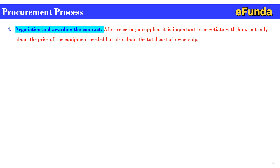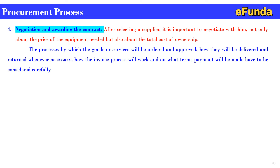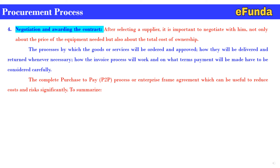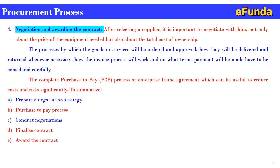Fourth: negotiation and awarding the contract. After selecting a supplier, it is important to negotiate not only about the price of the equipment needed, but also about the total cost of ownership. The process by which goods or services will be ordered and approved, how they will be delivered and returned whenever necessary, how the invoice process will work, and on what terms payments will be made, all need to be considered carefully. The complete purchase-to-pay (P2P) process or enterprise frame agreement can be useful to reduce cost and risk significantly. To summarize, the steps are: A. prepare a negotiation strategy, B. purchase-to-pay process, C. conduct negotiation, D. finalize contract, E. award of the contract.